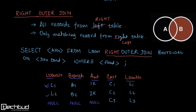In right outer join, we will have all the records from the right table but only the matching records from the left table. Using the Venn diagram, we are considering everything from B (the right table) but only the matching tuples from A. The alteration is simply writing RIGHT OUTER JOIN instead of LEFT OUTER JOIN. In the output, we have all the tuples from the right and only matching tuples from the left; where there is no matching tuple in the left for a right record, we put null.